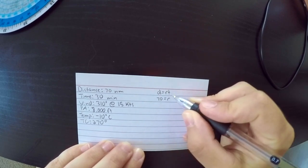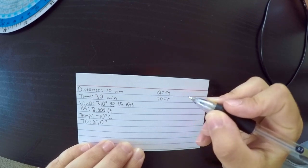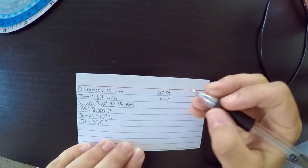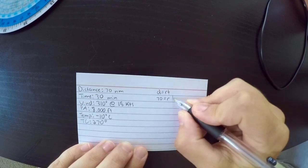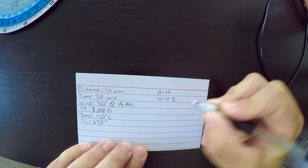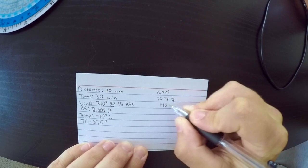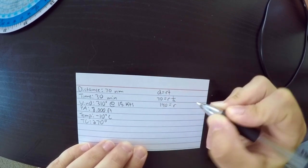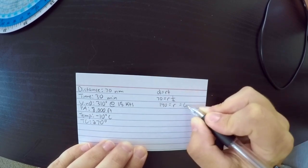Now, you can't just put 30 for 30 minutes. It needs to be out of 60, because obviously 60 minutes in an hour. So we're going to do one-half here. Just do some multiplication. And 140 is your rate, which is also your ground speed.